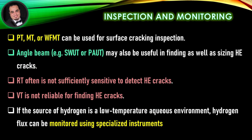Inspection and Monitoring: Liquid penetrant testing, magnetic particle testing, or wet fluorescent magnetic particle testing can be used for surface cracking inspection. Angle beam shear wave ultrasonic testing or phased array ultrasonic testing may also be useful in finding and sizing hydrogen embrittlement cracks. Radiographic testing often is not sufficiently sensitive to detect hydrogen embrittlement cracks. Visual testing is not reliable for finding hydrogen embrittlement cracks. If the source of hydrogen is a low-temperature aqueous environment, hydrogen flux can be monitored using specialized instruments.